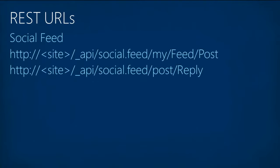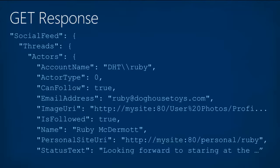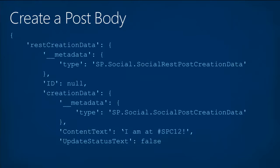Your REST URLs matter. If posting to a social feed use the social feed capabilities; if posting to a site, you still use social feed but the site becomes the actor. The social feed response is rich information — you get all the information about the actor that posted the feed. When you create a post you simply post to the URL you want, adding that token, and then build up the post body for your application.